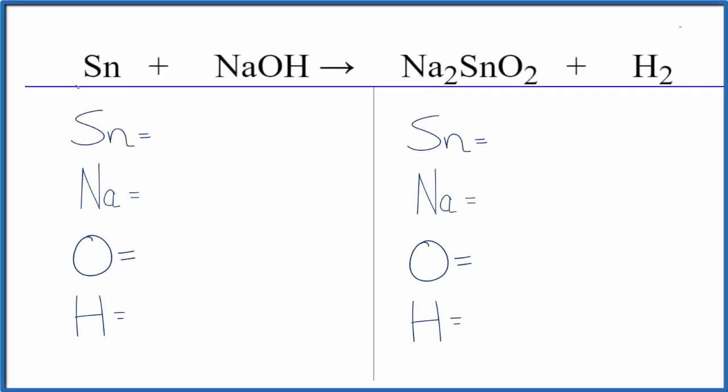Let's balance the chemical equation tin plus sodium hydroxide. The first thing we do is count up the atoms on each side. One tin atom, one sodium, one oxygen, and one hydrogen. On the product side we have one tin, two sodiums, two oxygens, and two hydrogens.